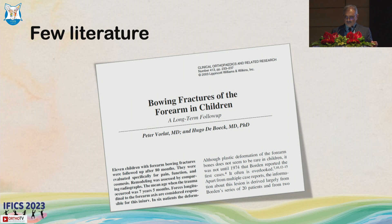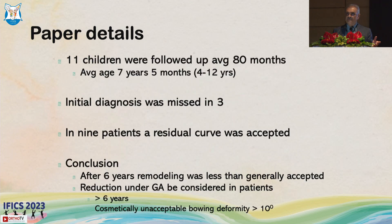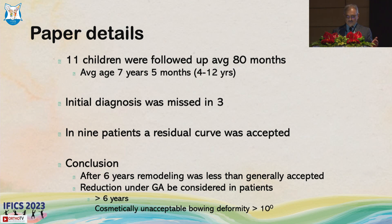The fracture of the forearm was described earlier and there is very limited literature — only a handful of papers. One paper contained only 11 patients with an average follow-up of 80 months; initial diagnoses were missed in 3 cases. In 9 patients some malalignment was accepted, and the conclusion was that after 6 years remodeling is generally less, so we need to be more careful.